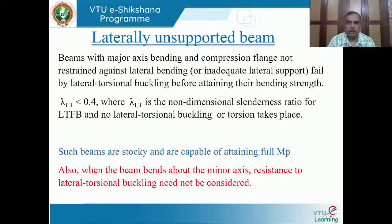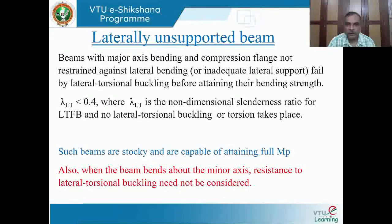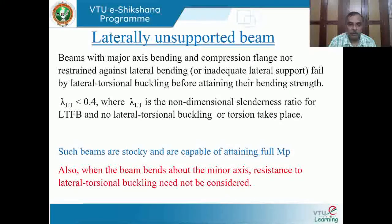Now let us consider the laterally unsupported — also called laterally unrestrained — beam. These are beams where the moment of inertia about the major axis is significant, making them susceptible to lateral torsional buckling. This is characterized by the non-dimensional slenderness ratio λLT. If λLT < 0.4, there is no lateral buckling; otherwise, it is a laterally unsupported situation.